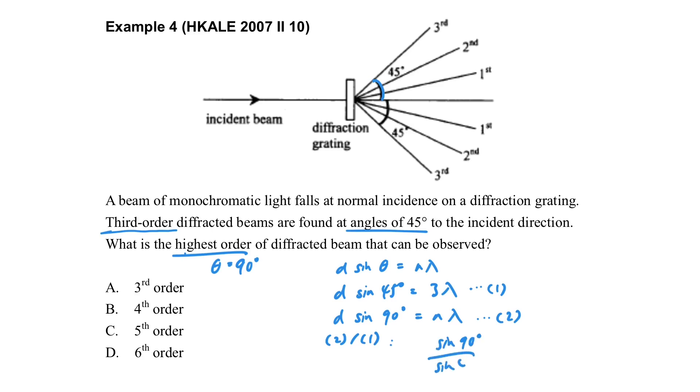So by just equation 2 divided by equation 1, then we can find the n. Actually, it's not difficult. So 4 point something, so we know that the answer is 4th order.